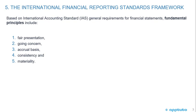The International Financial Reporting Standards Framework. Based on International Accounting Standard general requirements for financial statements, fundamental principles include: 1. Fair presentation, 2. Going Concern, 3. Accrual Basis, 4. Consistency, and 5. Materiality. You can see the fundamental principles are bolded, and there are five principles. You have to know those five principles and have them memorized as such.